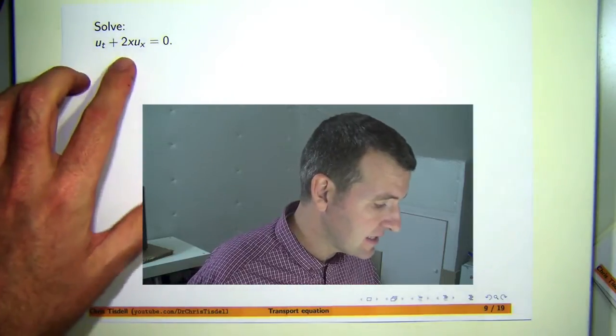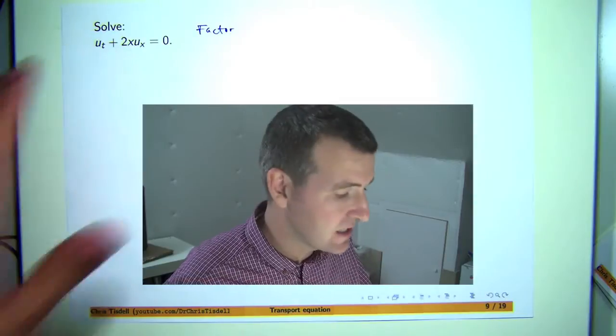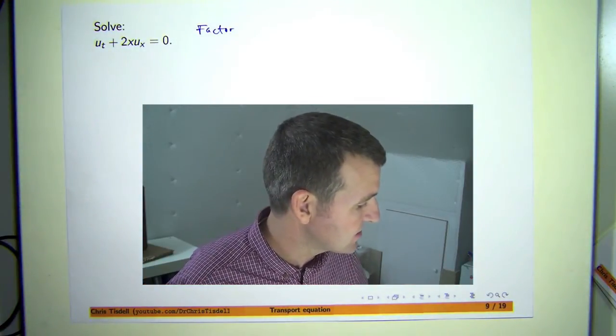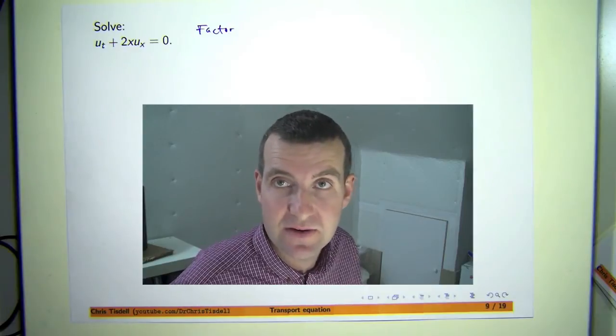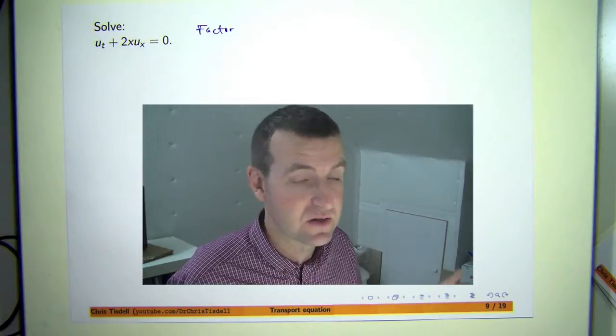Okay, and the key is to factor the left-hand side into an appropriate dot product, then scale it so it is a directional derivative and you know that the directional derivative will be zero. Hence, you must be a constant at all points in a certain direction.